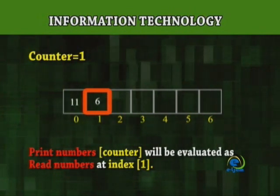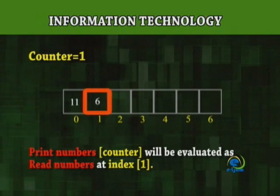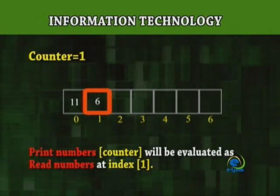This will continue up to 6, because since the first index is 0, 0 to 6 is 7 numbers.